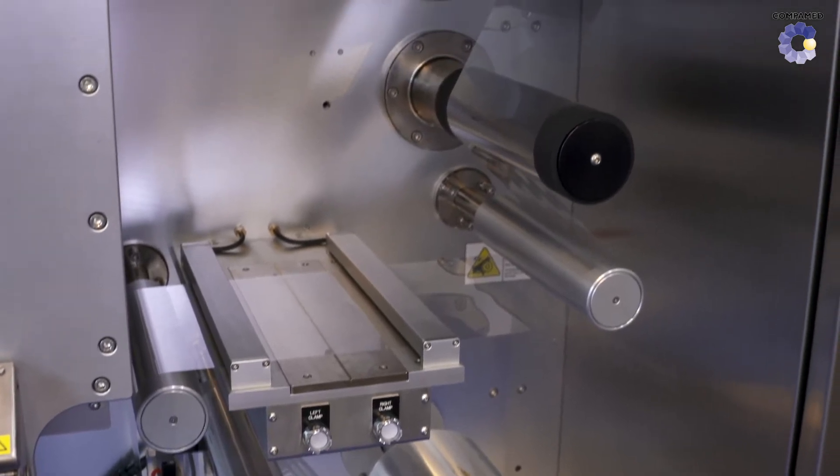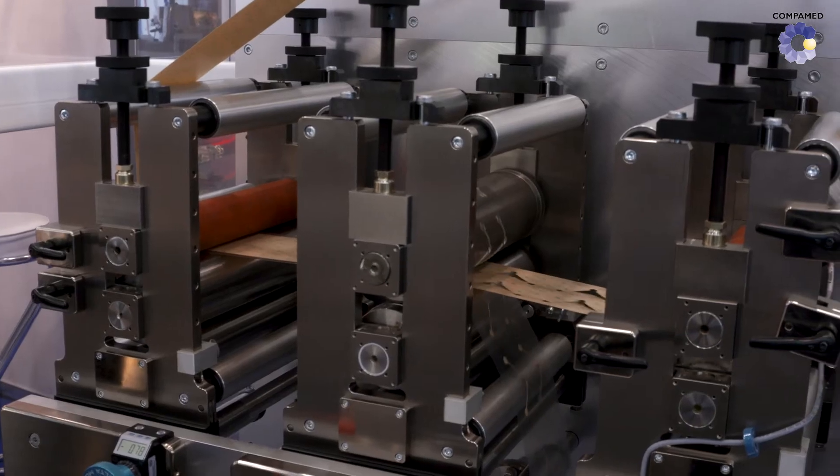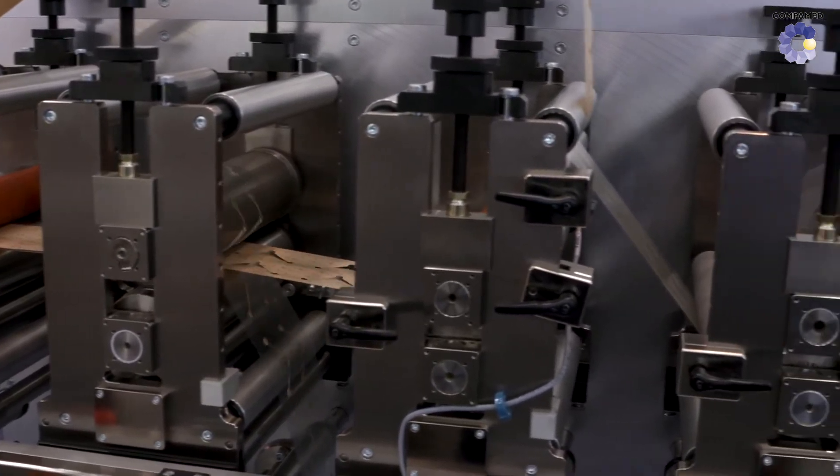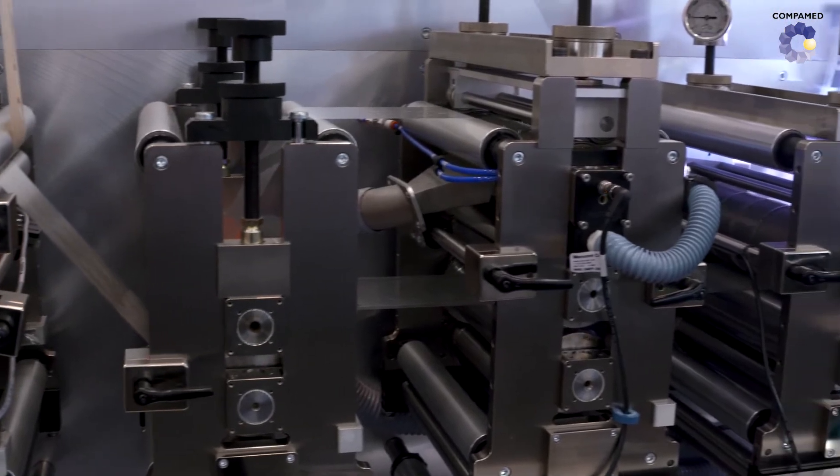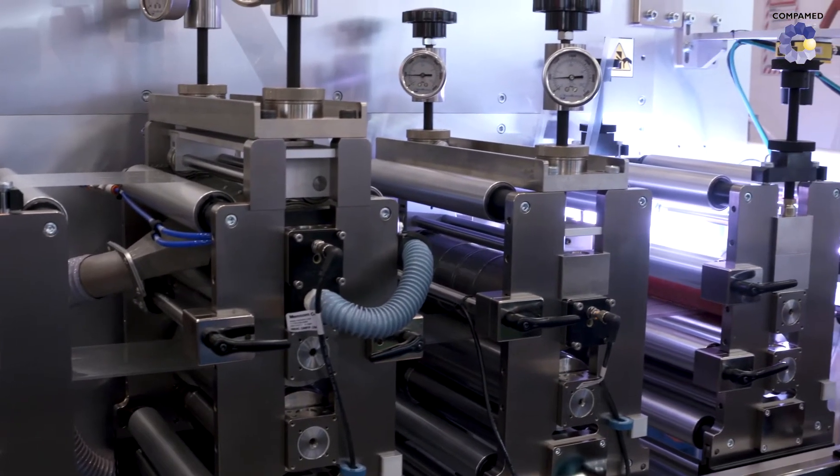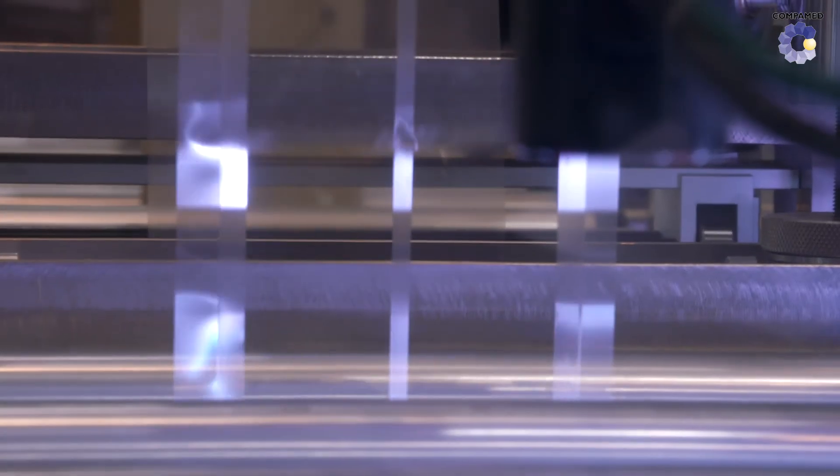Today we're showing two pieces of equipment, one representing Delta Mod Tech which is a converting piece of equipment. On this equipment we're utilizing three different dies, syncing them together, using a camera vision system to help register everything, and doing multiple laminations and delaminations.